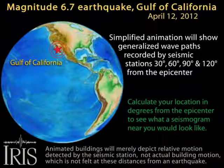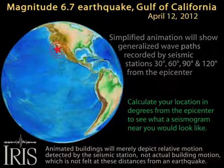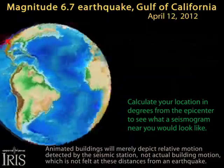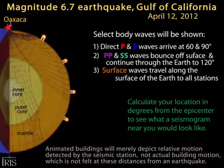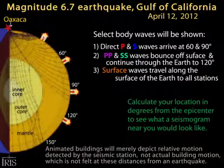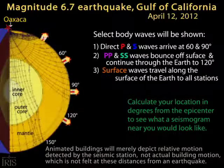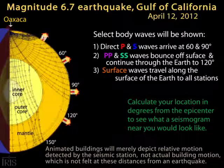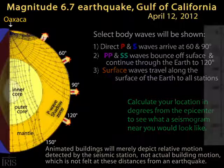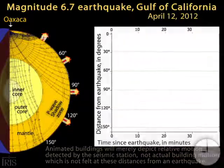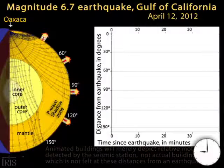The earthquake in the Gulf of California sent seismic waves in all directions through the Earth. This highly simplified model will depict seismograms from three stations that record direct wave arrivals, and one shadow zone station between 104 and 140 degrees from the epicenter that records PP and SS waves.